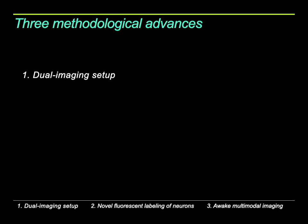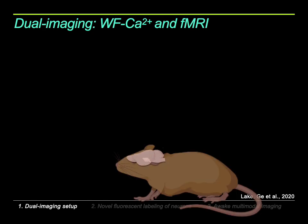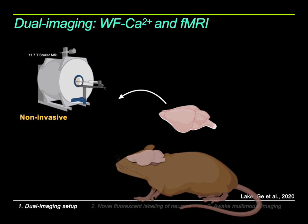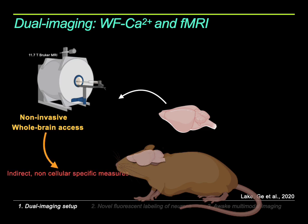For the dual imaging setup, which is the core of our experimental setting, it's based on the combination of fMRI and wide-field calcium imaging. fMRI is a great technique that allows non-invasive whole-brain access, which is why it's widely used in the clinic and will serve as our common denominator between preclinical work and the clinic. However, it provides indirect, non-cell-specific signal and has relatively lower spatial-temporal resolution.